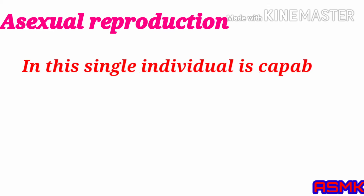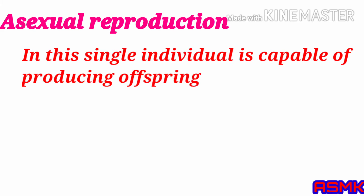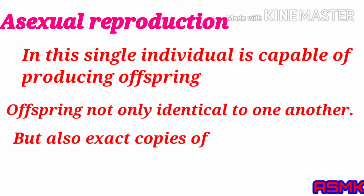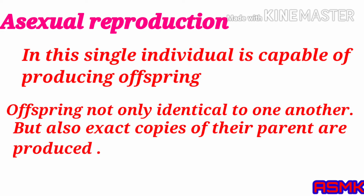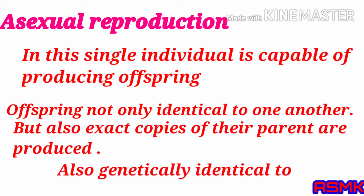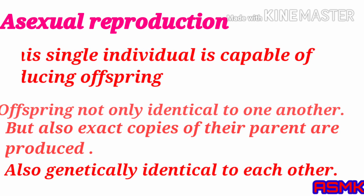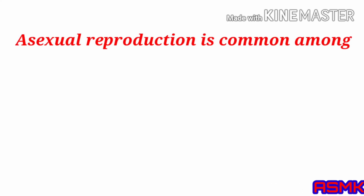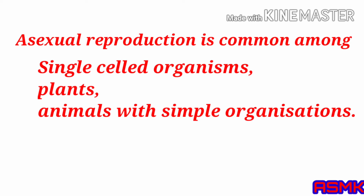In asexual reproduction, a single individual is capable of producing offspring. The offspring are not only identical to one another but are also exact copies of their parent, and they are genetically identical to each other. The term clone is used to describe such morphologically and genetically similar individuals. Asexual reproduction is common among single-celled organisms, plants, and animals with simple organization.